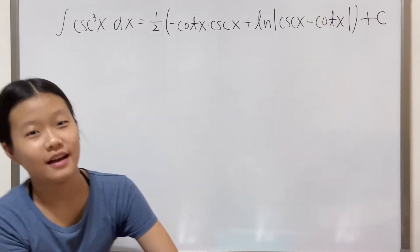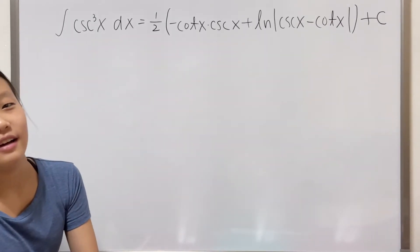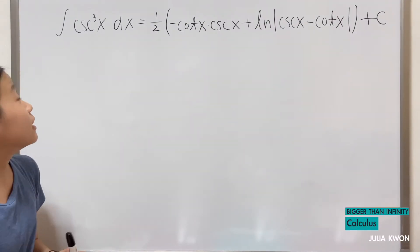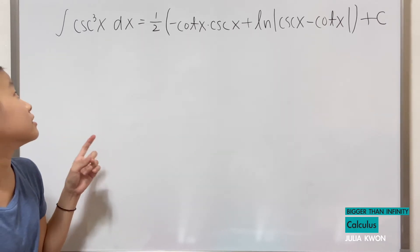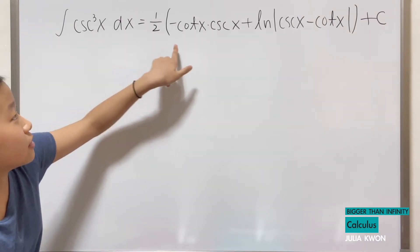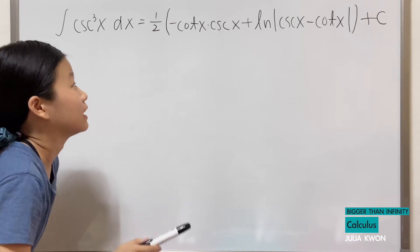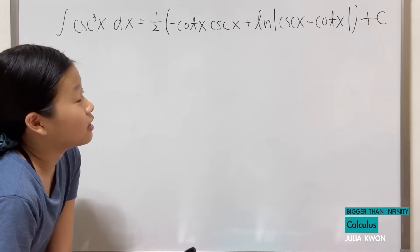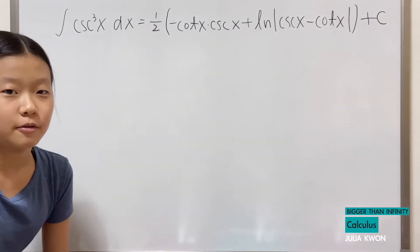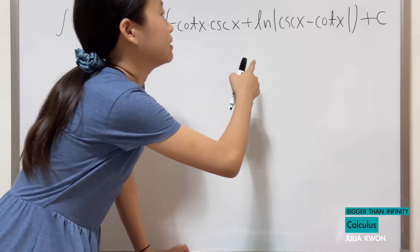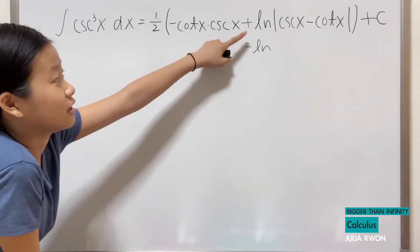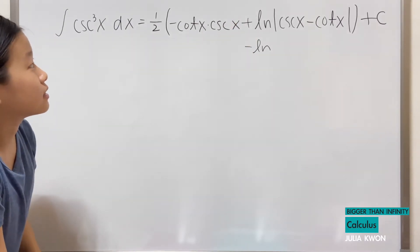Hello everyone! In this video, I'm going to clarify something that might have confused some viewers in a video I made a long time ago. It was a video about how to solve for the integral of cosecant cubed x dx, and in that video I came up with the solution that it is equal to one half of negative cotangent x multiplied by cosecant x, plus ln of the absolute value of cosecant x minus cotangent x, plus C. One of our viewers commented that the actual answer has a negative ln, and I'm assuming he or she was referring to that ln part.